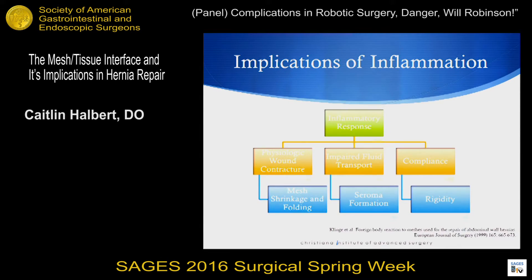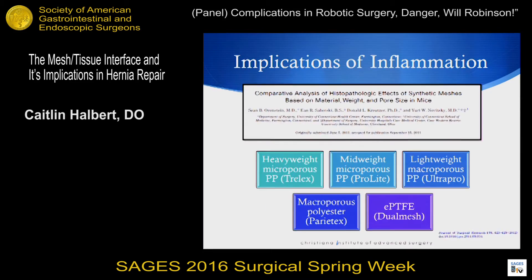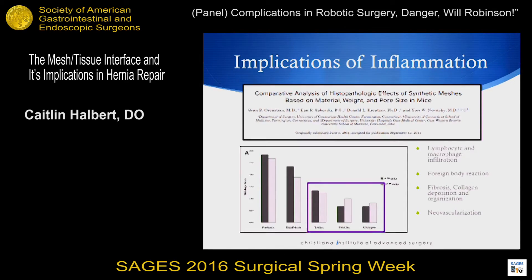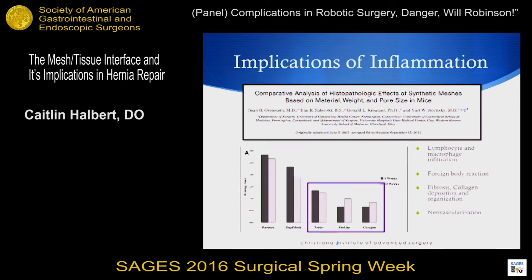This is from Novitsi's group, looking at different weighted polypropylene meshes and also comparing that to the laminar PTFE and polyester meshes, in an animal model. They looked at foreign body reaction and also fibrosis as a surrogate for collagen reorganization and tissue integration. Both with fibrosis and with foreign body reaction, the graphs show that less inflammatory response occurred with the polypropylene as compared to the polyester and the PTFE — a pretty dramatic difference — both at the four-week mark and also at the 12-week mark.